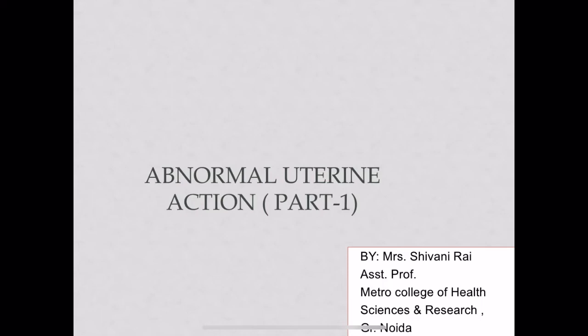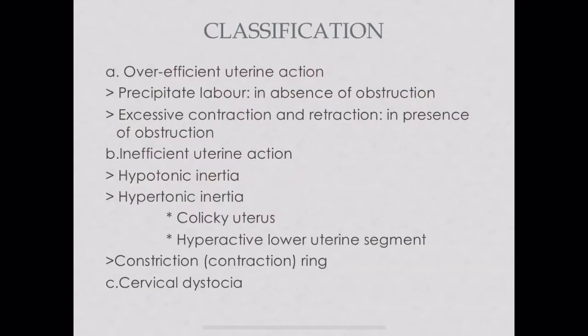Hello everyone, today we will do revision for the topic of abnormal uterine action, part one. This topic is divided into two parts — half the portion will be covered in this lecture and the next part will be uploaded soon. Starting with the classification: abnormal uterine action is classified as over-efficient uterine action or inefficient uterine action.